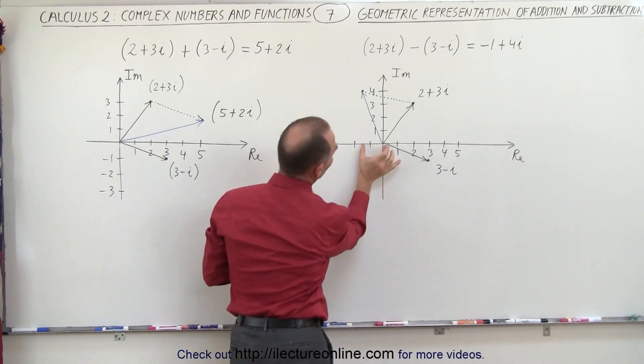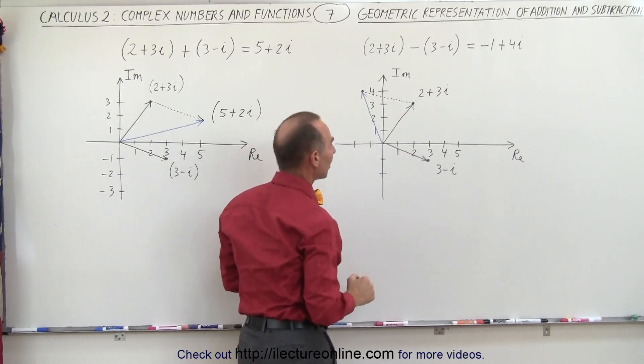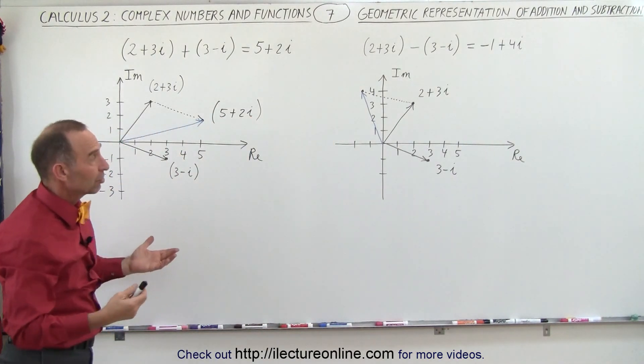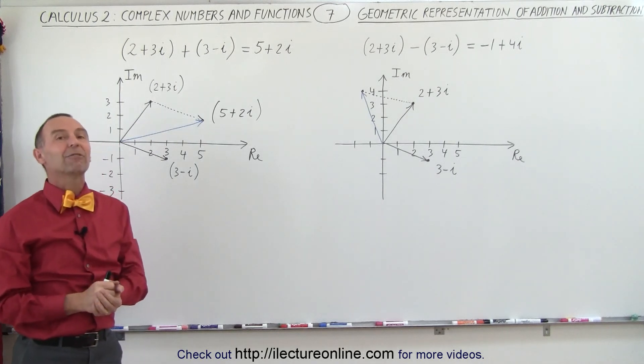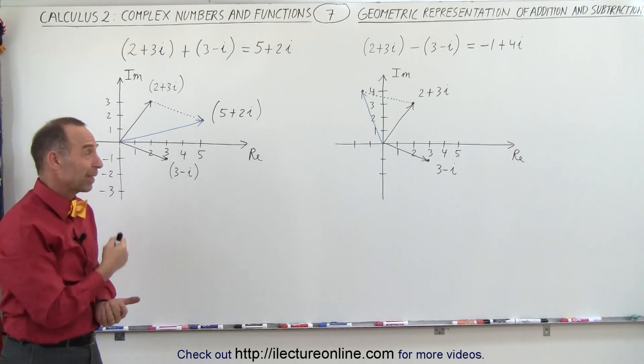And you can see that, sure enough, we have a minus 1 in the real direction and a plus 4 in the imaginary direction. So you can see that visually or geometrically, adding complex numbers is a lot like adding vectors with real components and imaginary components. And that's how it's done.